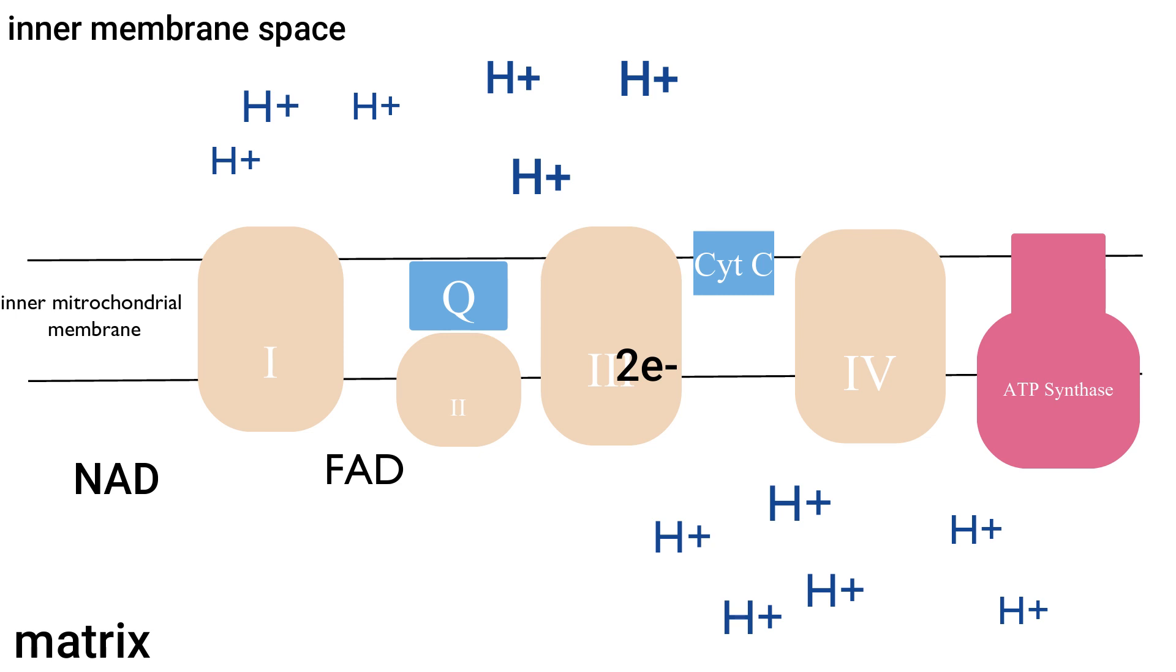Complex 3 will then pass these electrons onto cytochrome C. Cytochrome C will pass these electrons onto complex 4, where complex 4 will become charged and pump protons into the intermembrane space, just like we have seen in complex 1 and complex 3. Complex 4 then passes the electrons to the final electron acceptor, which is oxygen. Oxygen will split into 2 ions, and then hydrogens are added to create 2 water molecules. This is the end of the electron transport chain. Now ATP synthase comes along, and the ATP synthase will use the proton gradient to create ATP molecules. As we have been seeing, protons have accumulated in the intermembrane space.